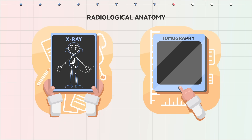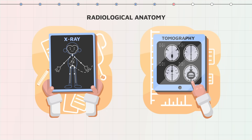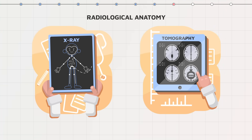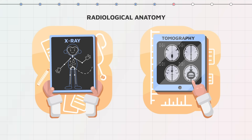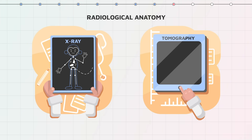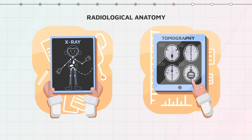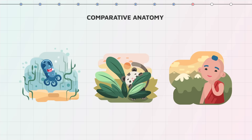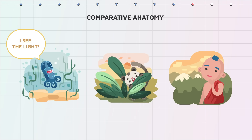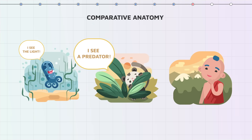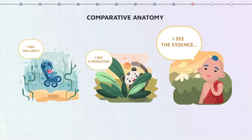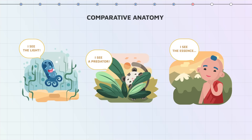Radiological anatomy reviews the structures in the aspect of their visibility on medical images like X-ray or different kinds of tomographies. Comparative anatomy studies the anatomical organization of different types of animals. Observed similarities may reflect evolutionary relationships.